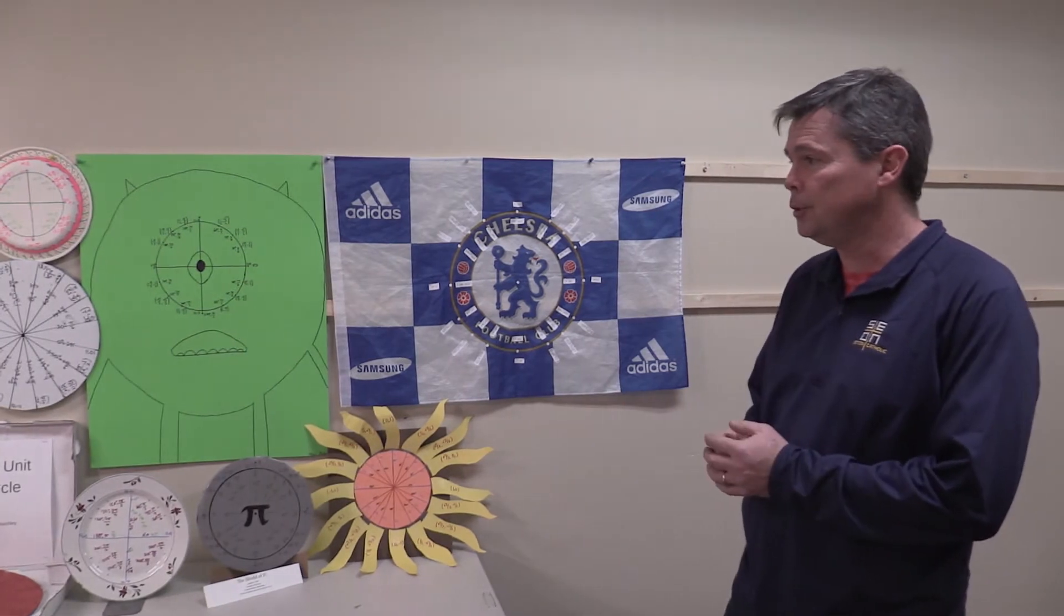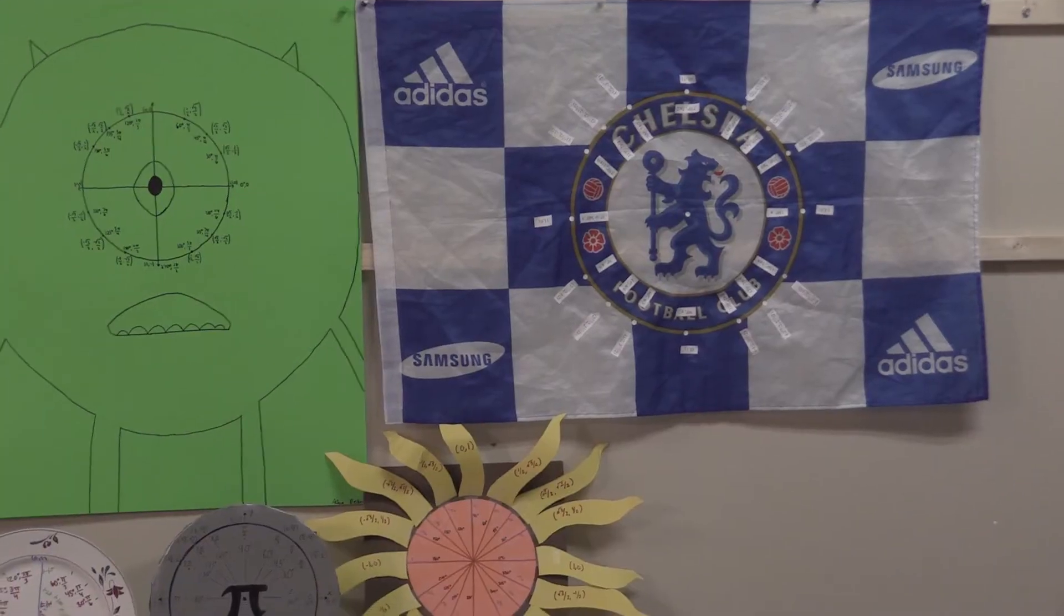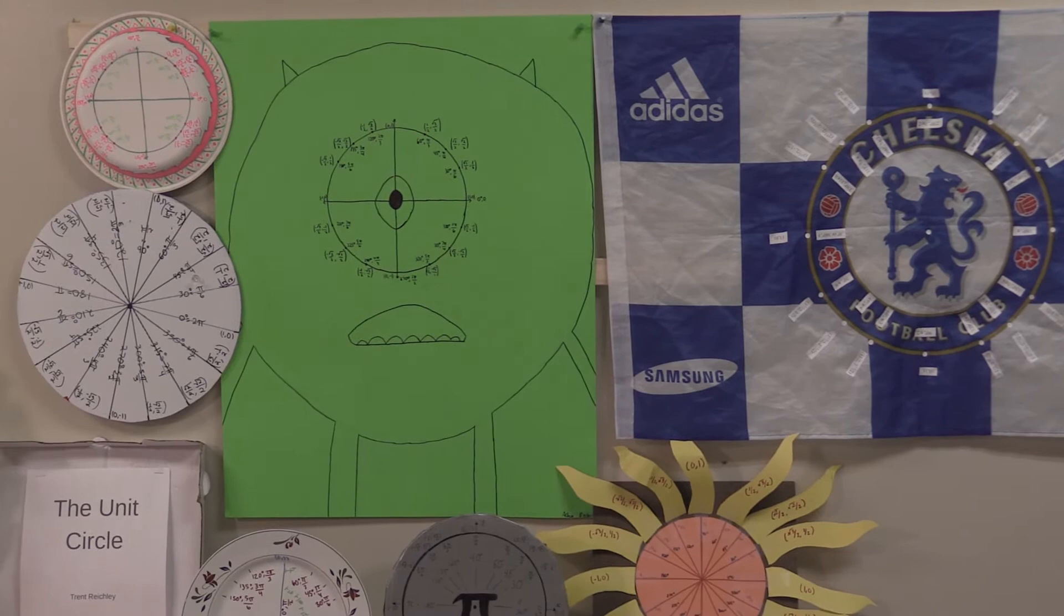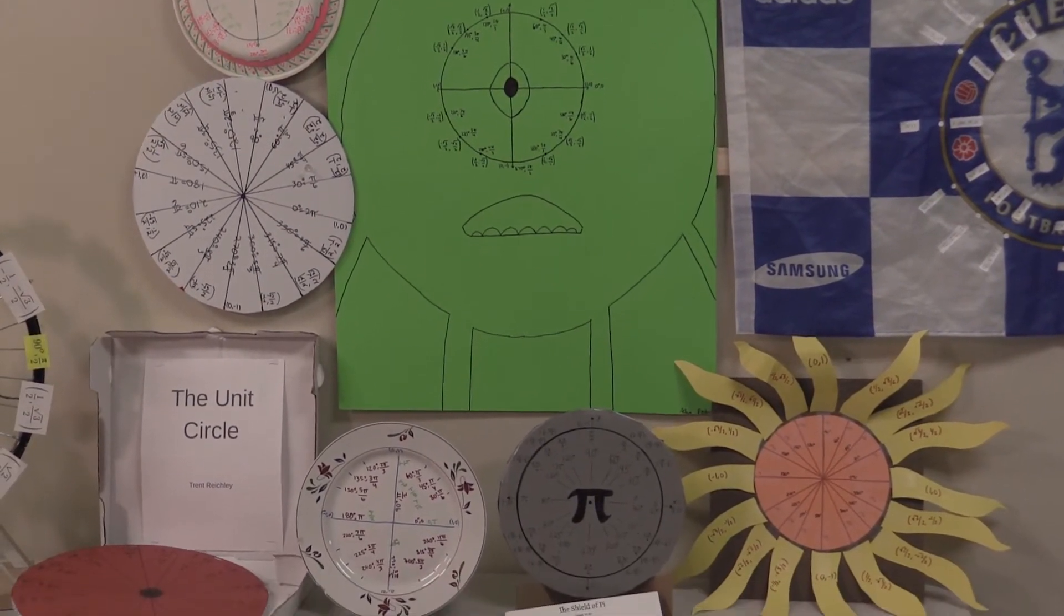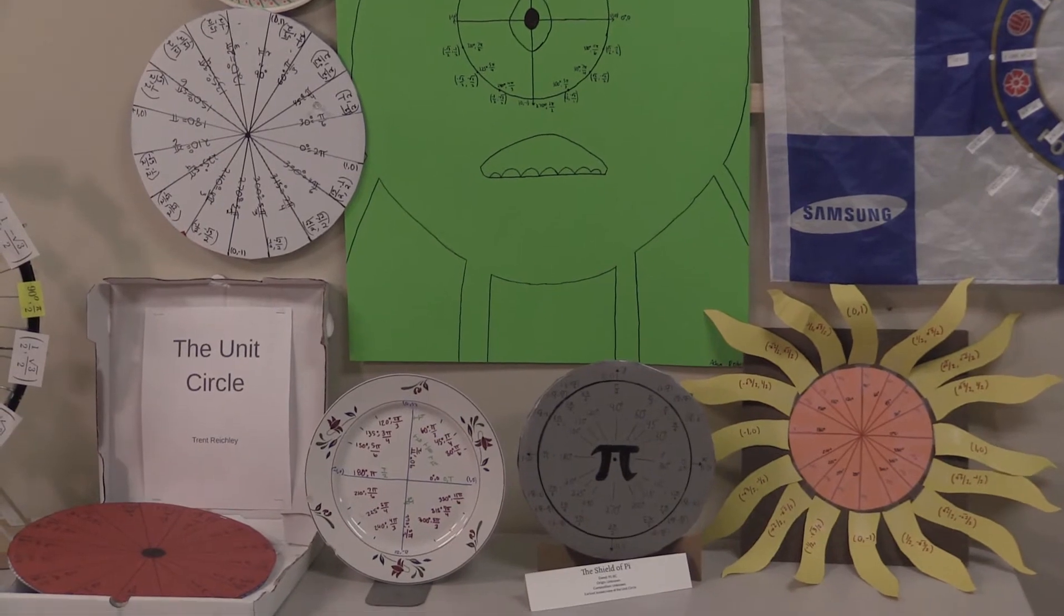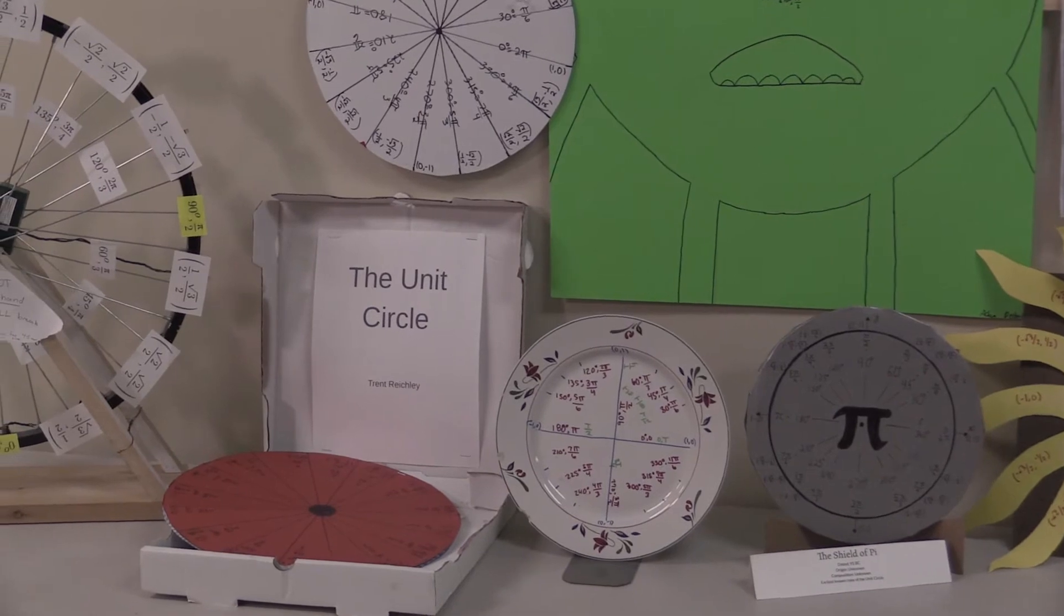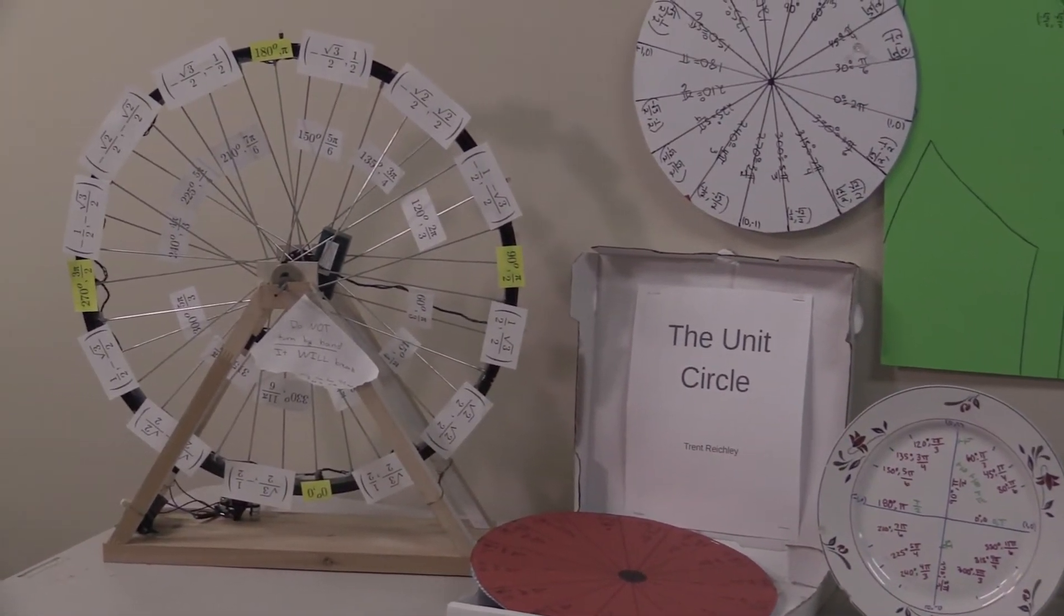I asked the students to make something that they like using the unit circle. They used flags, made shields, and a little Mike Wazowski poster. They also made a pizza pie, and the one that was especially interesting was the bicycle wheel for the unit circle.